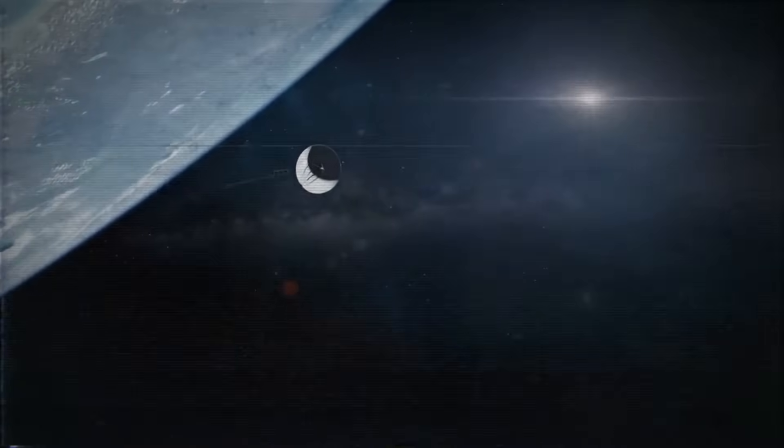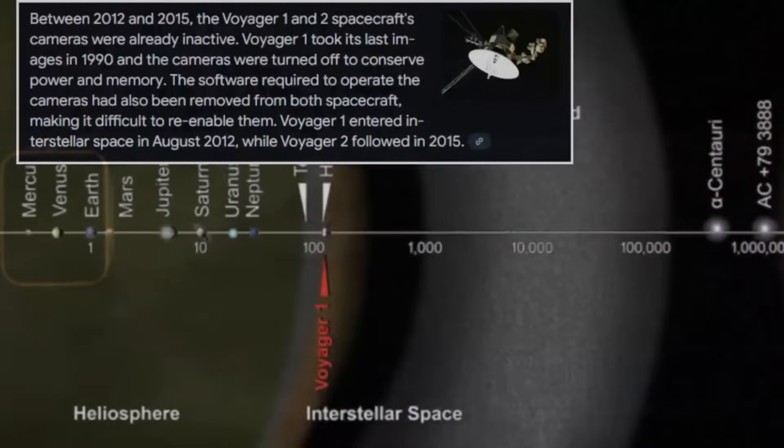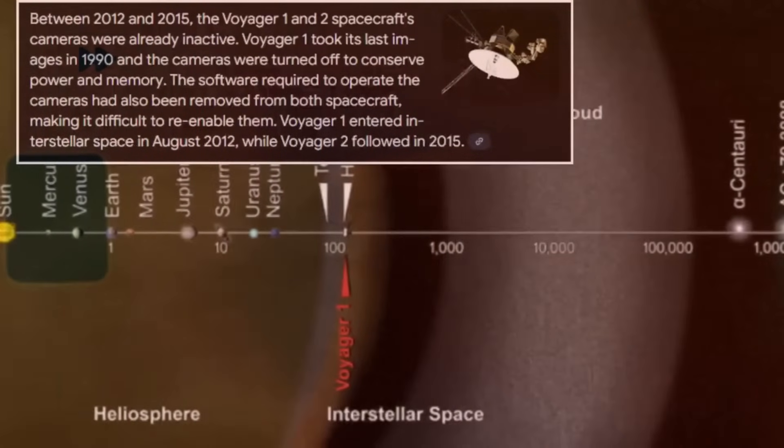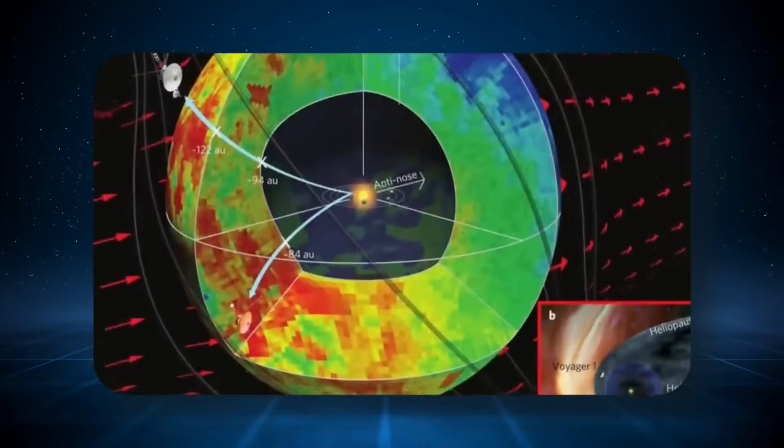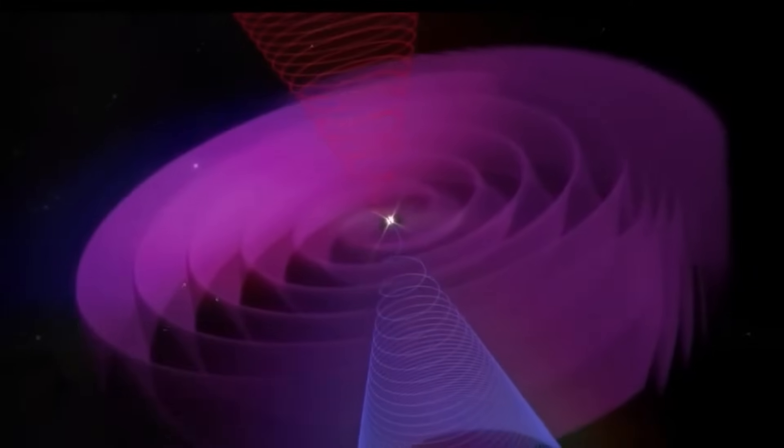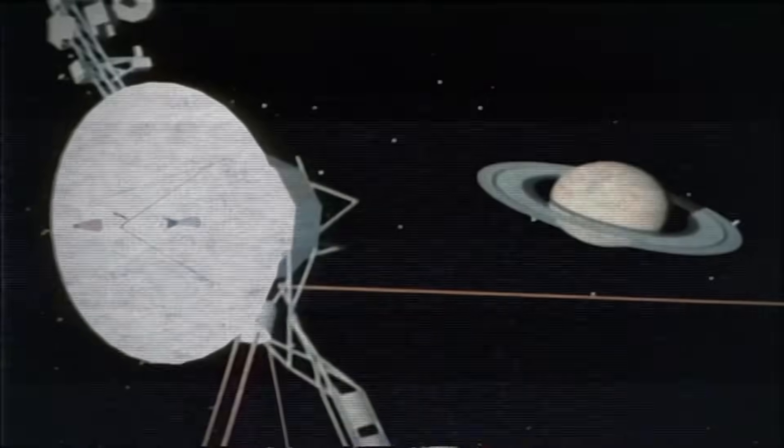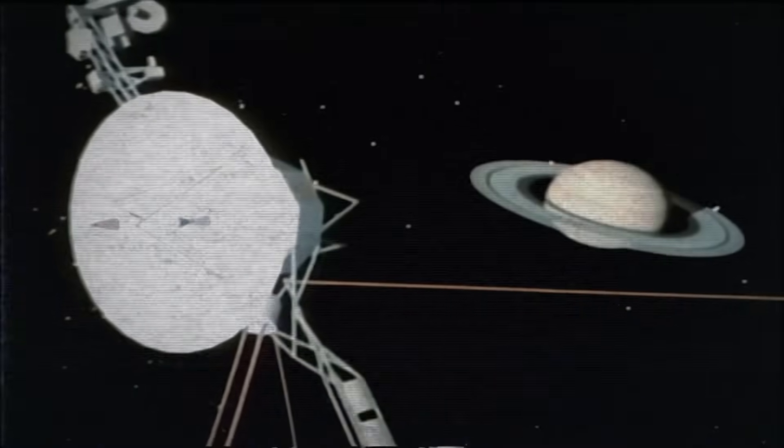But how? There had been no missions beyond its position, no possibility of recovery or retrofit. Voyager 1 was utterly alone in the void. Then came the kicker. Embedded in the frequency structure were values, constants, but not the ones anyone would expect. Not pi, not the golden ratio, not any of the hallmarks of mathematical universality.